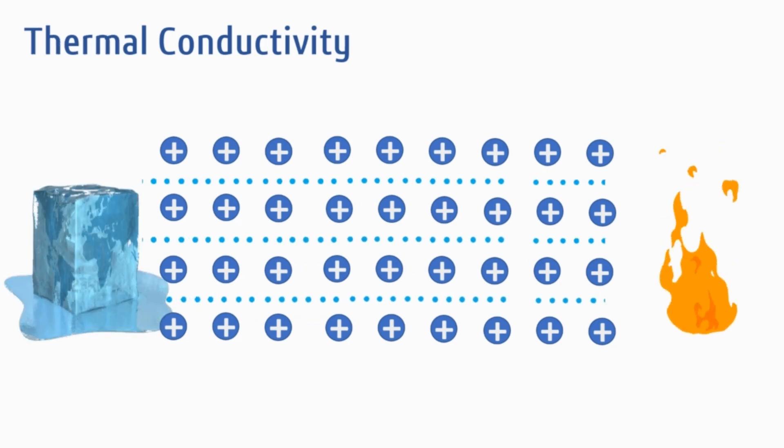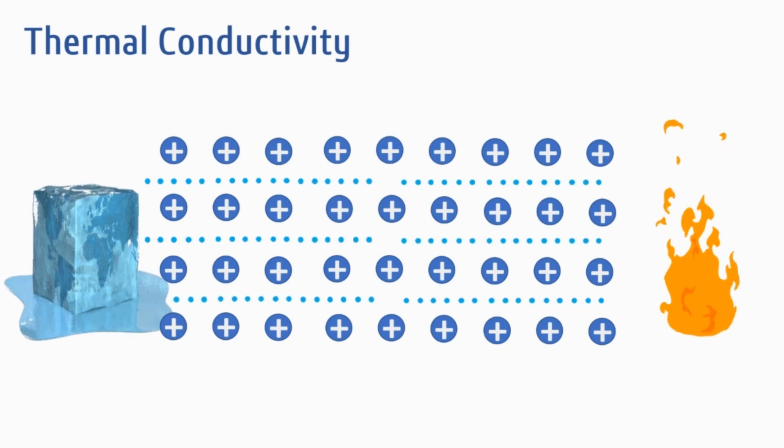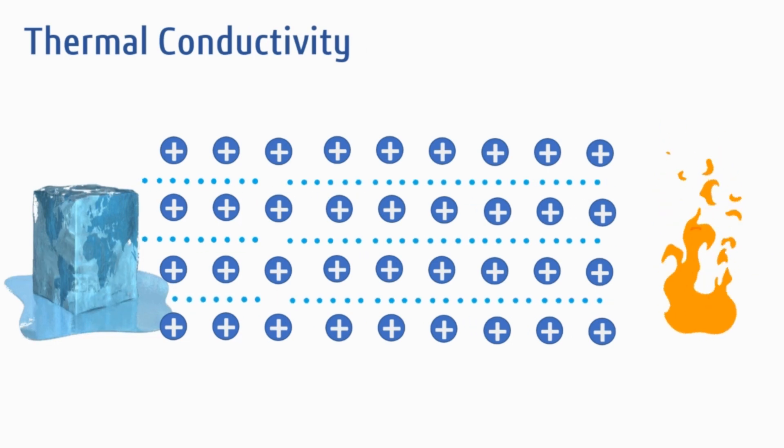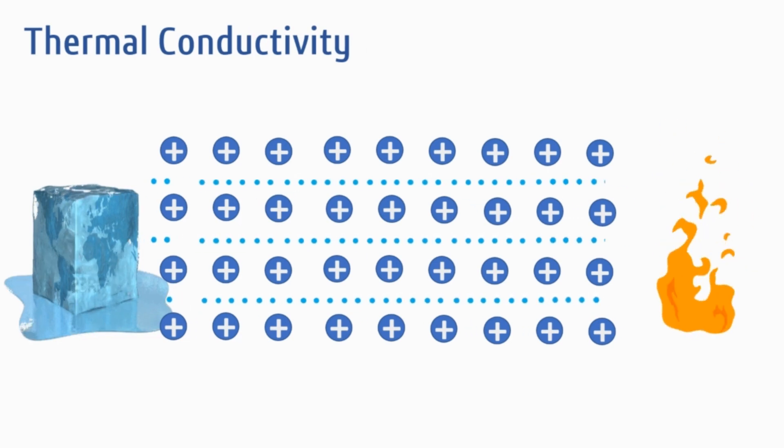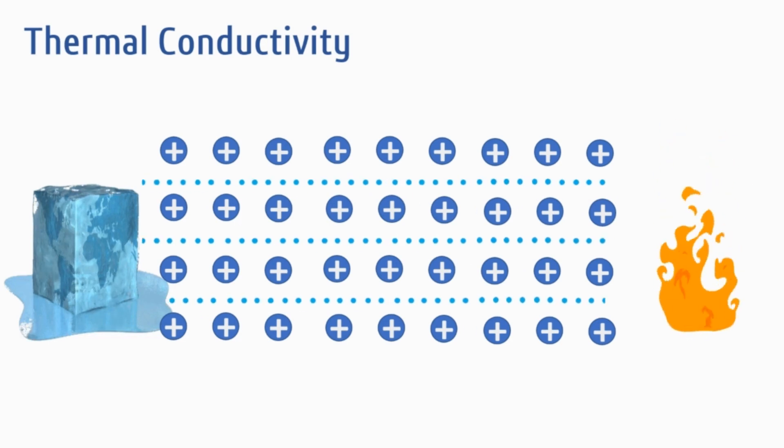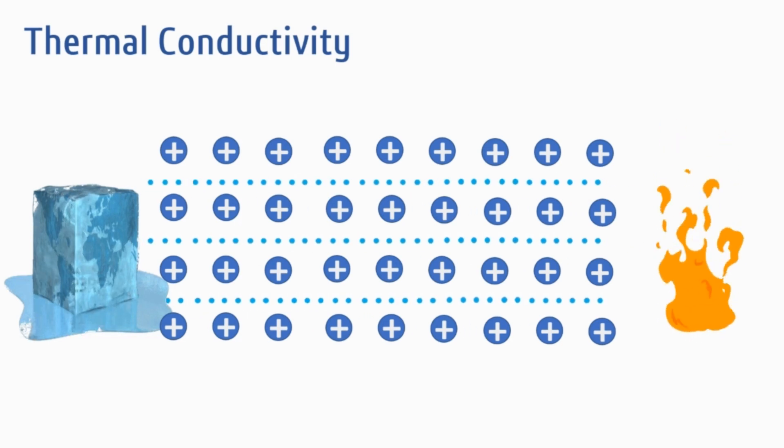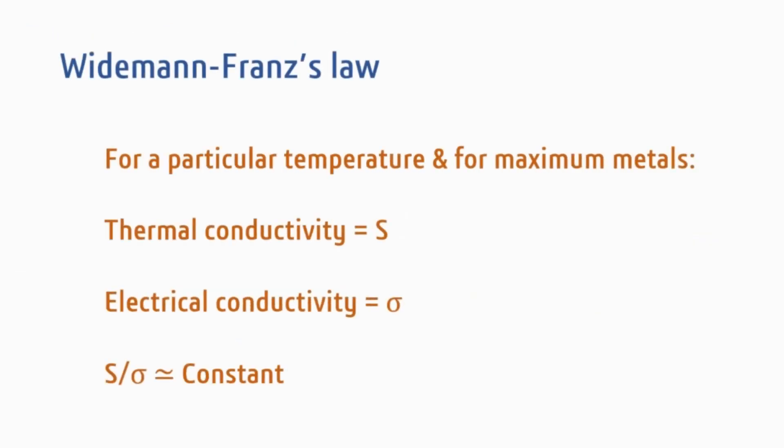Thermal conductivity: When metals are heated, the free electrons at the hot region acquire higher kinetic energy and move towards cooler region. Due to this directional movement heat is transmitted toward cooler end. If we consider the thermal conductivity S and electrical conductivity as sigma, then S by sigma is approximately constant for a large number of metals at particular temperature. This is known as Weidmann-France's law.